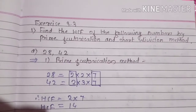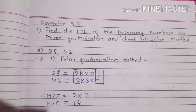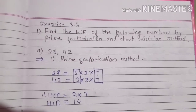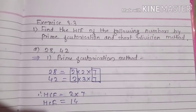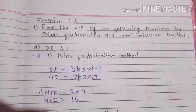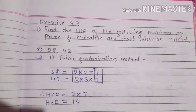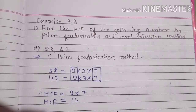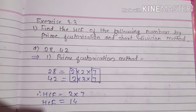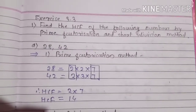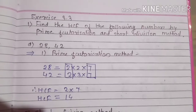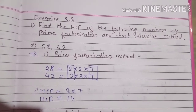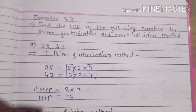Hello everyone, welcome back to my channel. It's learning time. Today in this video I am going to explain how to solve exercise 3.3. Question number one is: find the HCF of the following numbers by prime factorization and short division method. For question A, the numbers are 28 and 42. We have to factorize the given numbers using two methods: prime factorization and short division method. HCF means highest common factor.